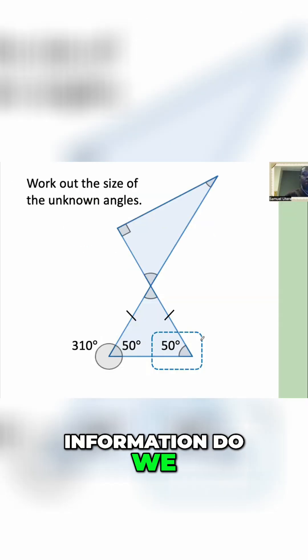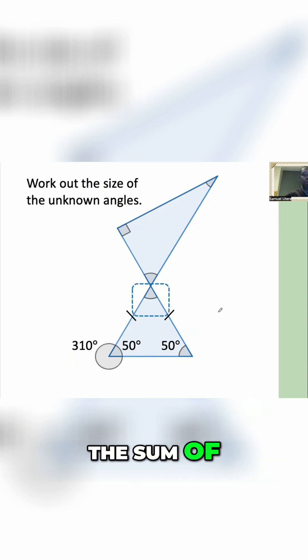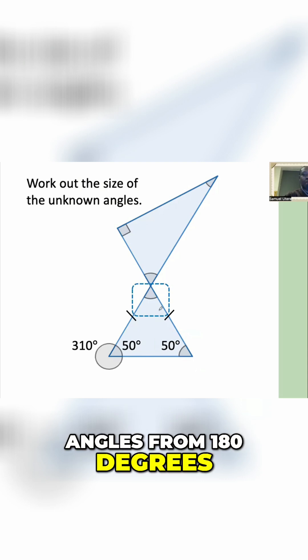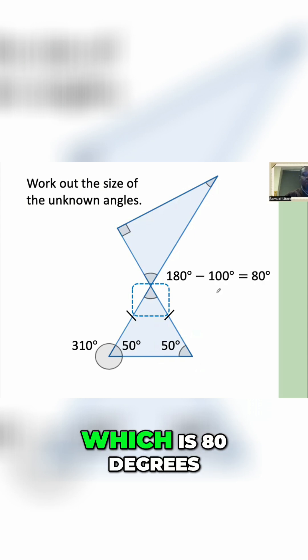What other information do we have that we can use to find some other angles? We know that the sum of angles in a triangle is 180 degrees. So if we subtract these two angles from 180 degrees, we would get this angle, which is 80 degrees.